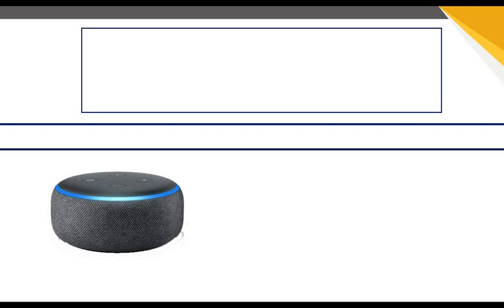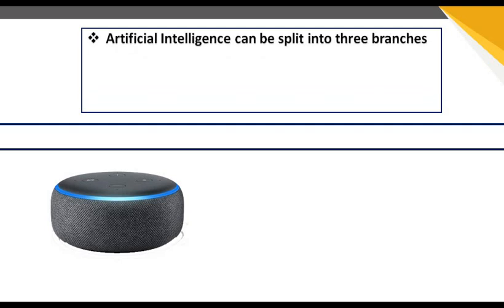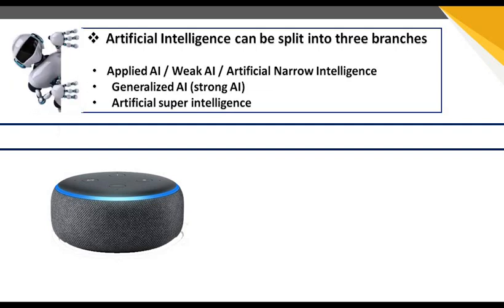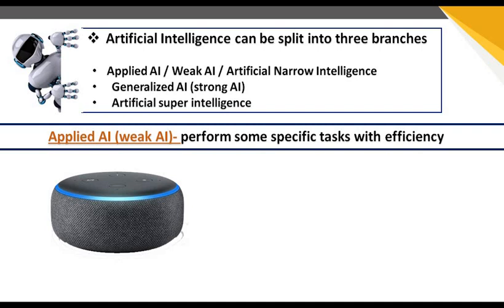When we talk about AI there are many terms that can be confusing. In this video I will explain these things. We are talking about three categories: first is Artificial Narrow Intelligence, second is Generalized AI which is Strong AI, and third is Artificial Super Intelligence. When we apply AI or power a weak AI, it performs some specific tasks with efficiency — this low level is called Applied AI.